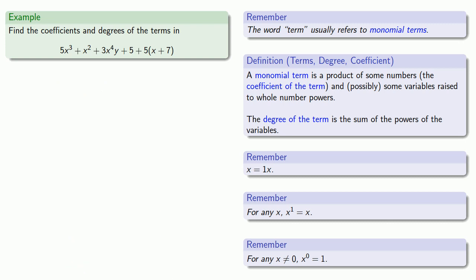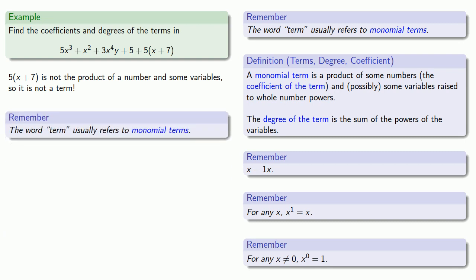And finally, this last thing in our sum, 5 times x plus 7. Well, this is not the product of a number and some variables, so this is not a term. Remember that in this context, when we talk about a term, we're really looking at a monomial term.